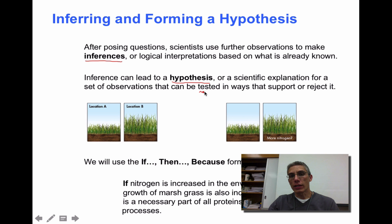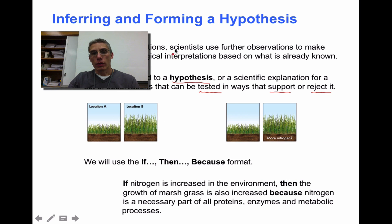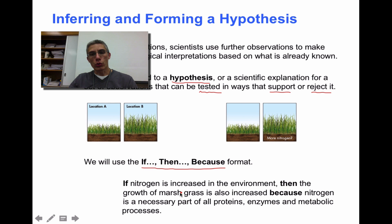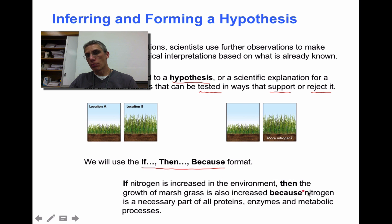It's only considered a hypothesis if it can be tested — tested in ways that are either going to support it or reject it. In my class, I would like you to use the if-then-because statement: if I do this, then this will occur because of this. For example: if nitrogen is increased in the environment, then the growth of the marsh grass is also increased, because nitrogen is a necessary part of all proteins, enzymes, and metabolic processes. Students rarely have problems with the if-then part, but sometimes they're tripped up by the because. The because part comes from any research you might do about the topic you made observations about.